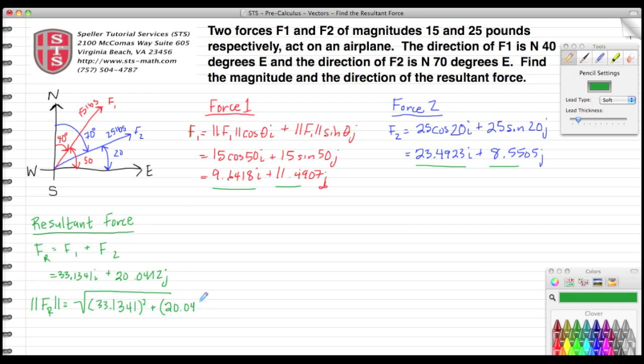Plus I'm going to square my j component, 20.0412, and the result for that is going to be 38.7236.